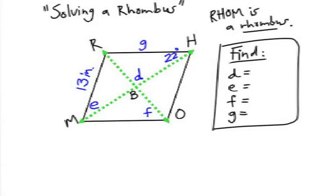In this diagram I have a quadrilateral that is labeled a rhombus, R-H-O-M. Notice that the diagonals intersect at point B. I'm given that angle R-H-B is 22 degrees, and I'm given that side R-M is 13 inches.